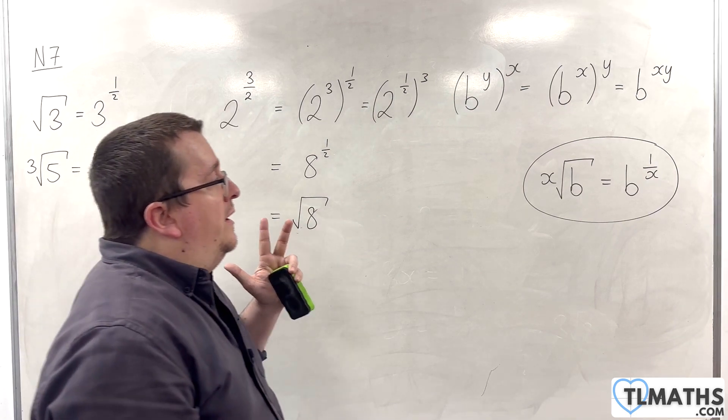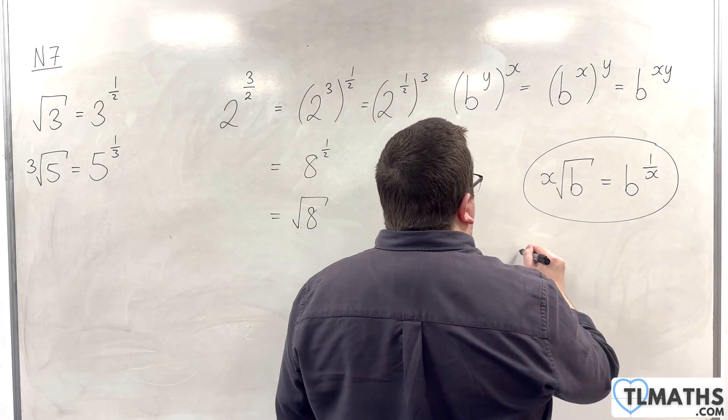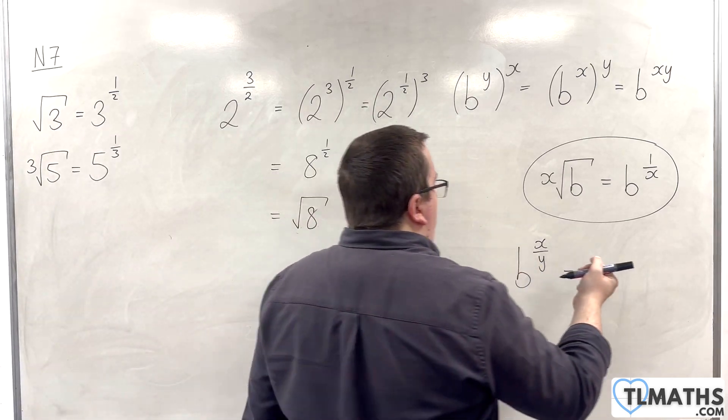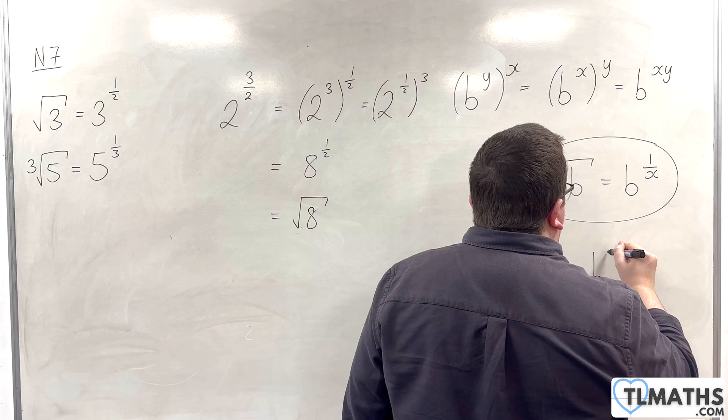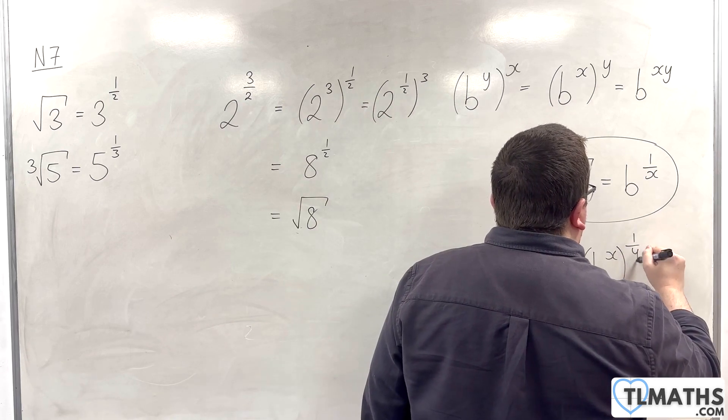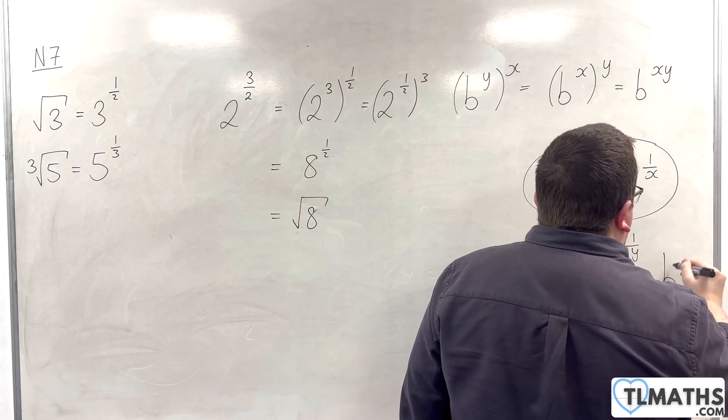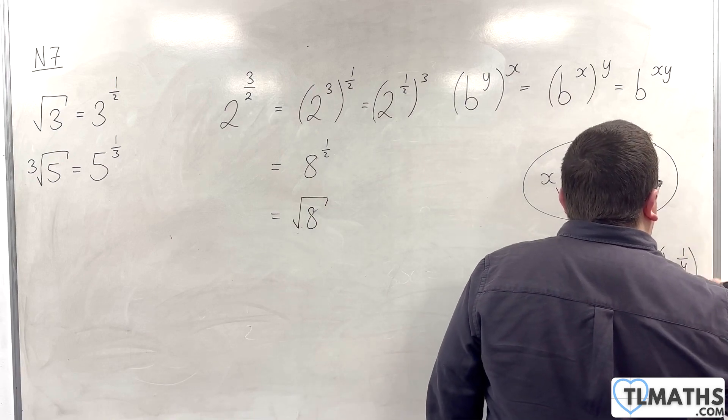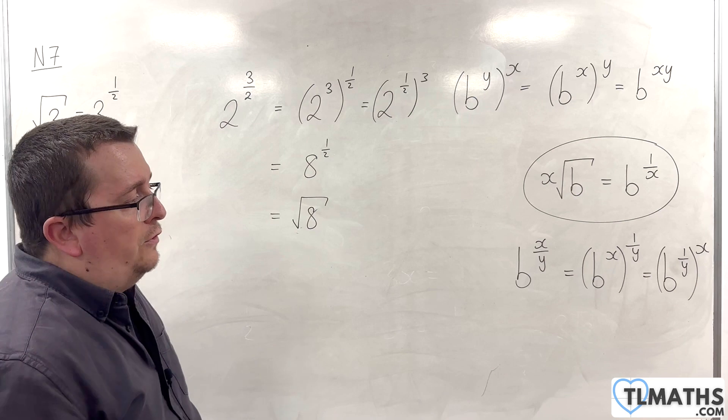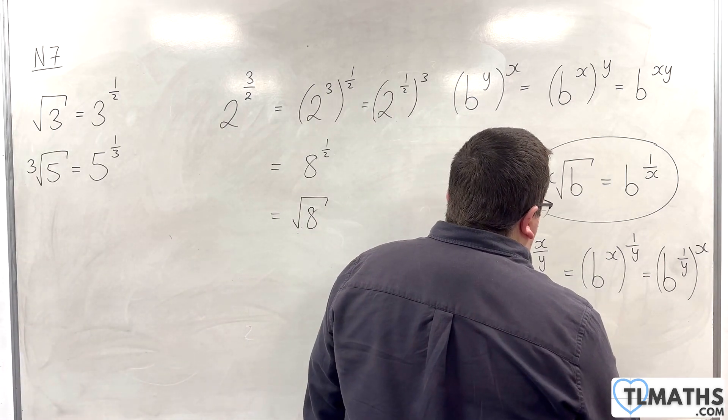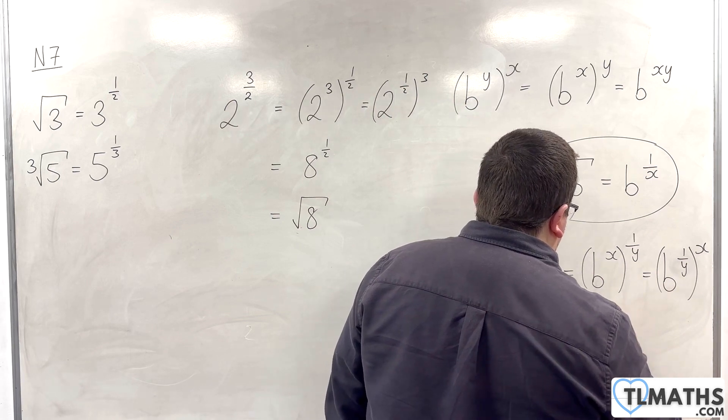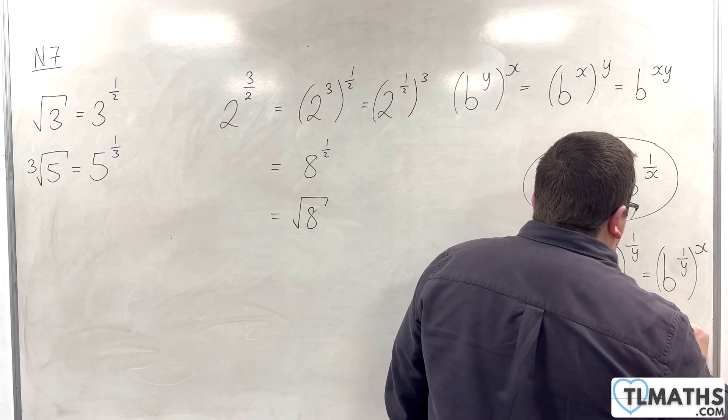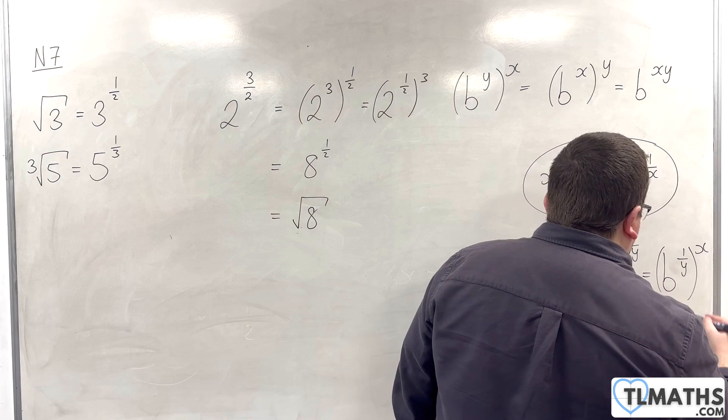So, what this is telling me is that I could generalise that and say that if I've got b to the power of x over y, then that is b to the power of x to the power of 1 over y. Or, that's the same as b to the power of 1 over y all to the power of x. Those two things are the same. So, it's the y-th root of b to the power of x, or the y-th root of b all to the power of x.